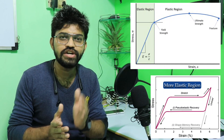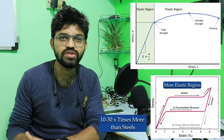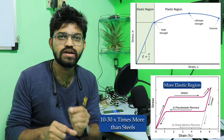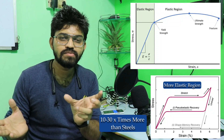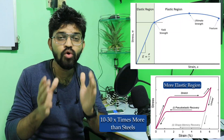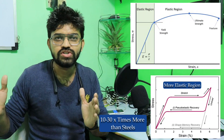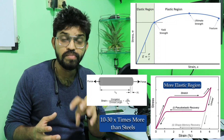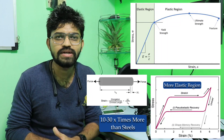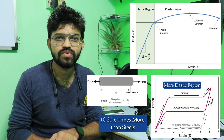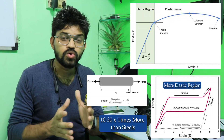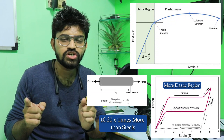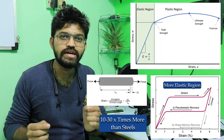The elastic region in the case of Nitinol is about 10 to 30 times more than that of steel. The material undergoes more deformation before failure — this is elastic deformation. Nitinol has a much larger elastic region than plastic region and can accommodate around seven to eight percent of strain. These are the two properties: shape memory effect and pseudoelasticity or superelasticity, which is why it is called a superelastic or pseudoelastic material.